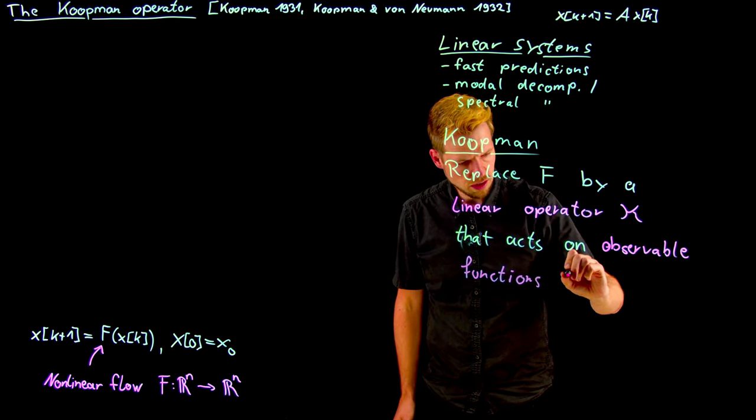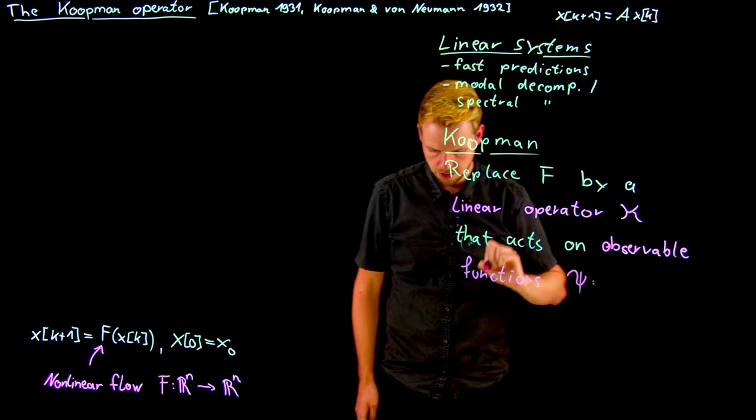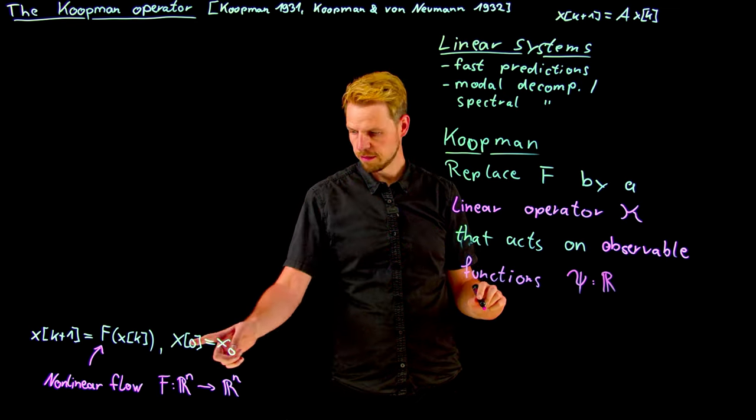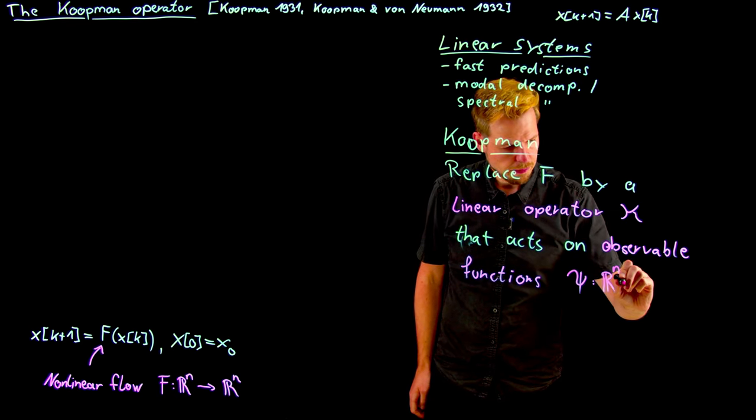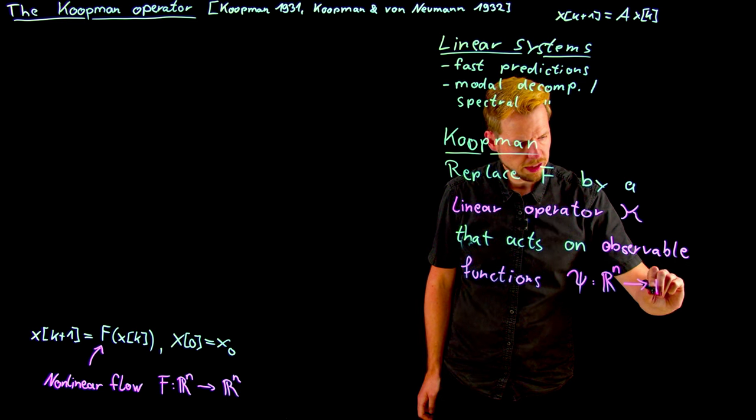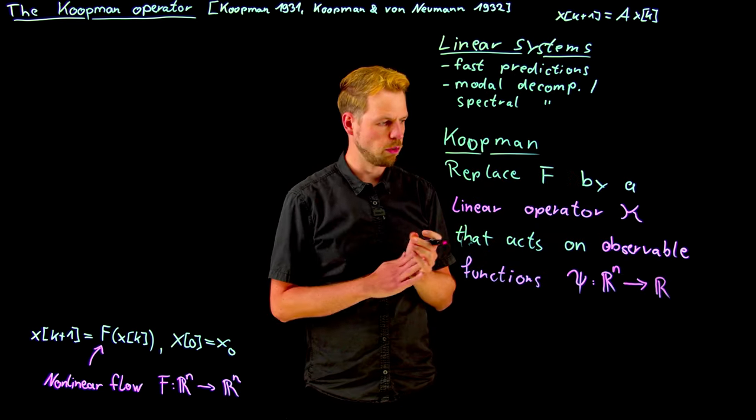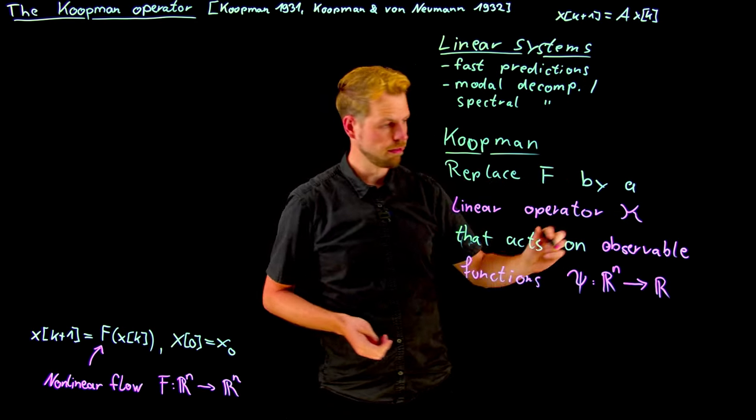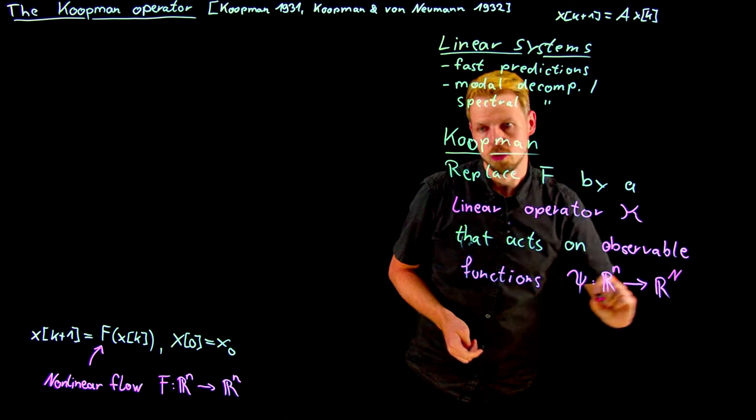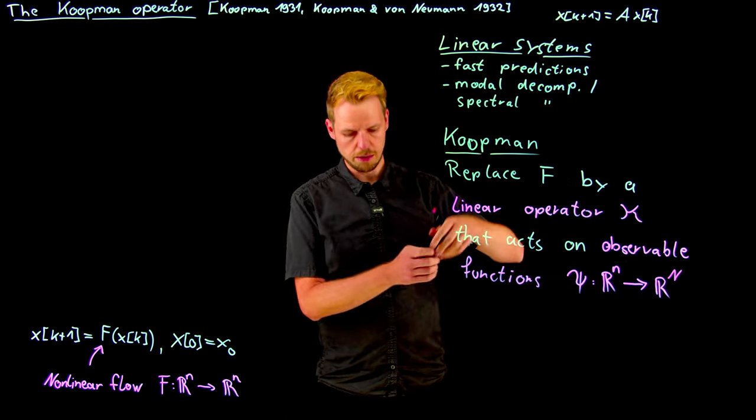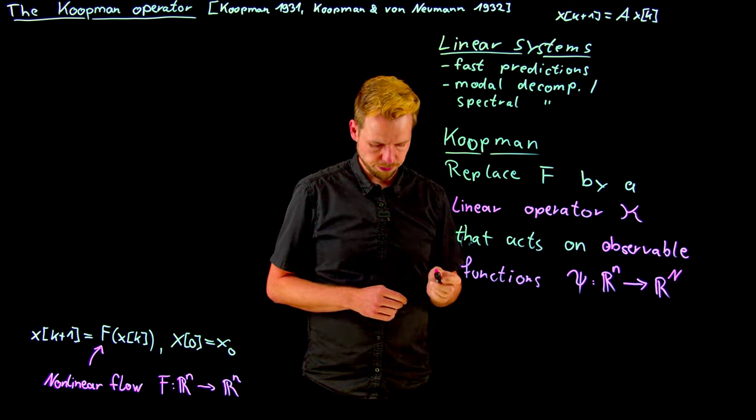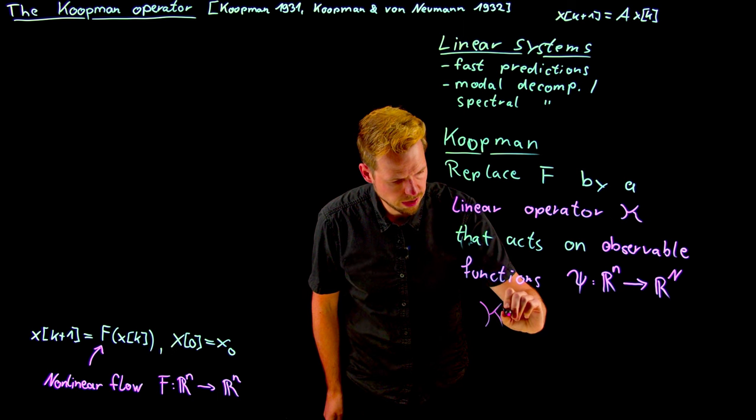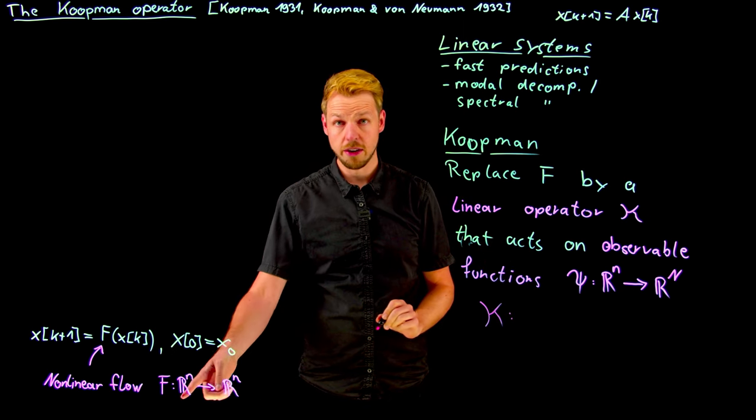And I'm going to call it psi, which is now a function mapping from the state space. So I'm taking my state x and I'm mapping to the complex numbers or for simplicity, I will consider real numbers here. The standard definition is in real numbers, scalars, but one can easily extend this to vector-valued outputs. And I'm going to use capital N for the number of observables that we're going to consider. So what we have is that this Koopman operator now is an operator that does not act from R^n to R^n on the state space, but from a function space.